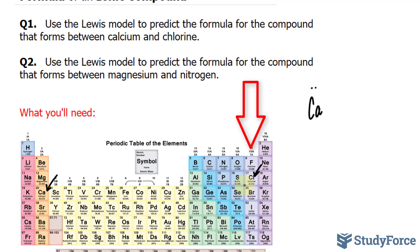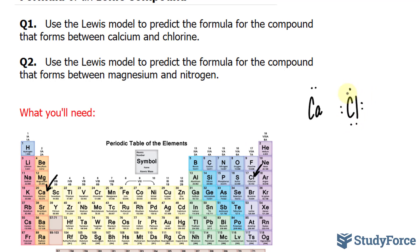And for chlorine, we have seven valence electrons because it is the final group before the noble gases. So I'll write down chlorine, and of course, if you ever forget, you can just count one, two, three, four, five, six, seven. So we have one, two, three, four, five, six, and seven.